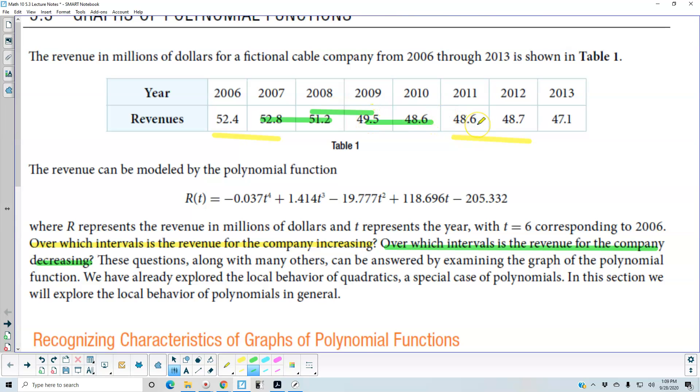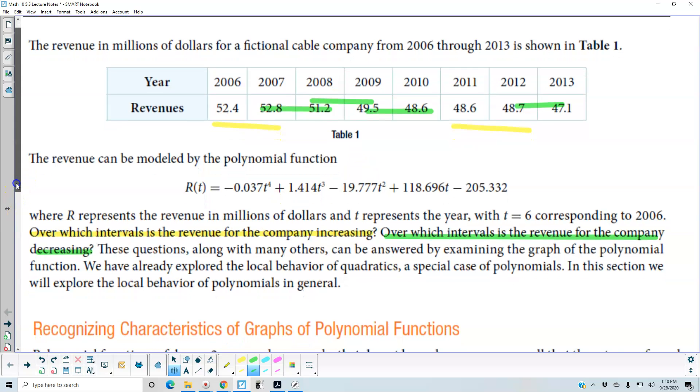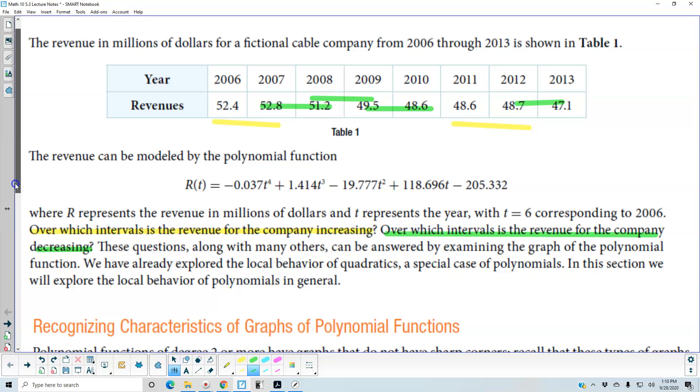It stays the same here. And then it's decreasing from there to there. So it decreased from 2007 to 2008, 2009, 2010, 2012, and 2013. And it increased between the years 2006 to 2007 and 2011 and 2012. Now we can see that by looking at the graph. Not the graph, excuse me, the table. Now we want to be able to look at this when we're looking at the graph. Where is it increasing? Where is it decreasing?